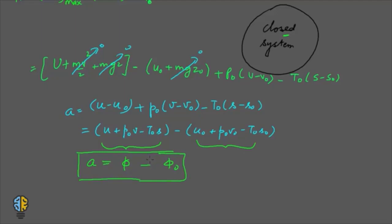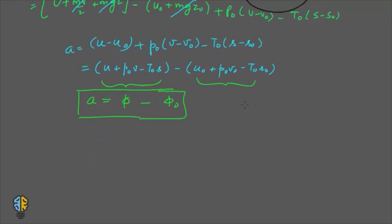Now if the system undergoes a change of state from one to two, then like in the steady flow process, the availability would become phi 1 minus phi naught minus phi 2 minus phi naught. So this will still be equal to phi 1 minus phi 2. So this is how you can find out the maximum useful work obtainable under the given surroundings.